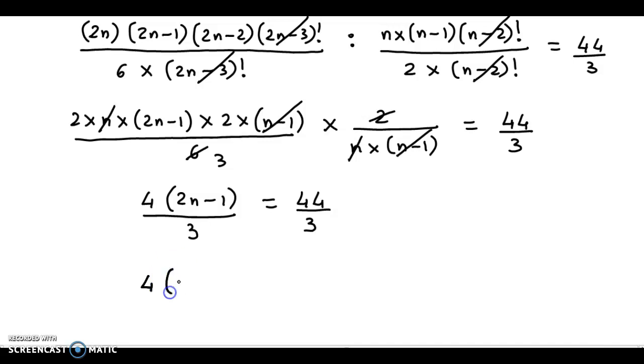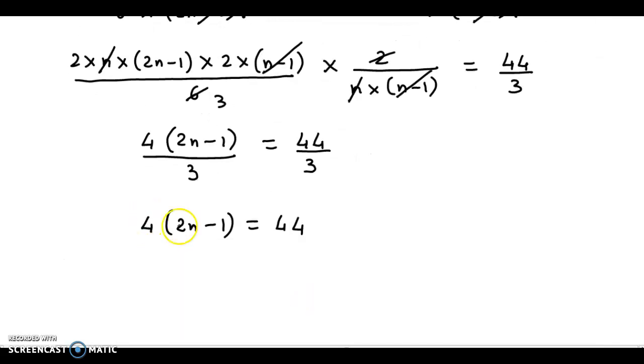So we have 4(2n-1) = 44. Now we divide by 4. So we have 2n-1 equals 11. Let's complete it here. So 2n equals 11+1, that gives us 12. Therefore, the value for n is equal to 6.